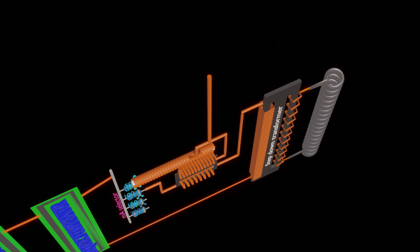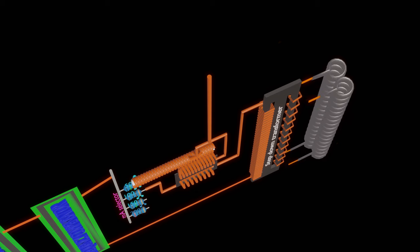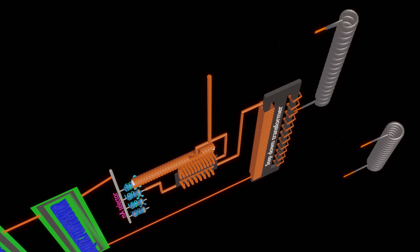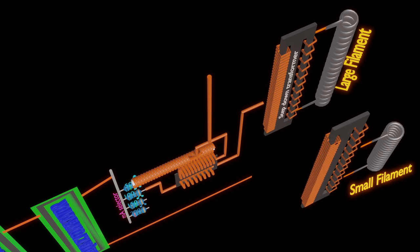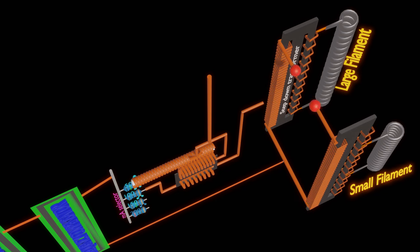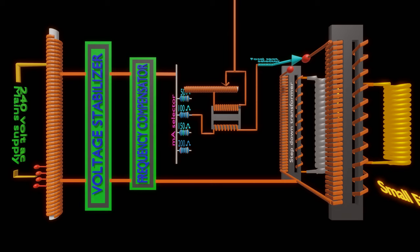For X-ray tubes having two filaments, one being small and the other being large, each filament will have its own filament transformer. A focal spot selector is to be incorporated in the circuit for switching between the filaments. This is all about different components of a filament circuit.